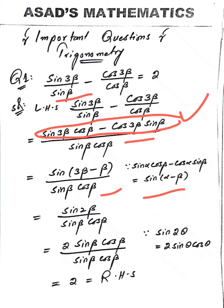This gives us sin 2β in the numerator. Here we apply the sin 2θ formula, which is sin 2θ = 2 sin θ into cos θ. So we get 2 sin β into cos β divided by sin β into cos β. Here, sin β cancels with sin β and cos β cancels with cos β, and only 2 remains, which is the right hand side.